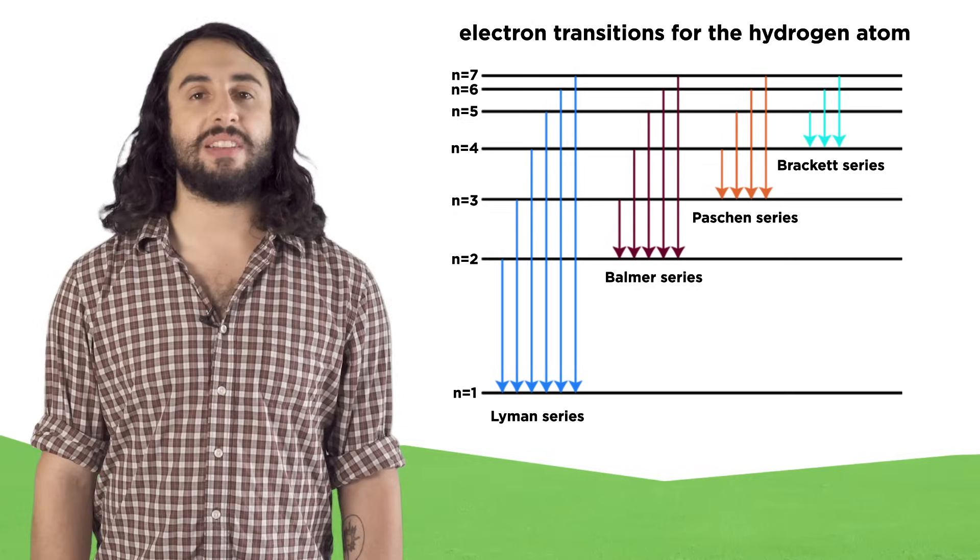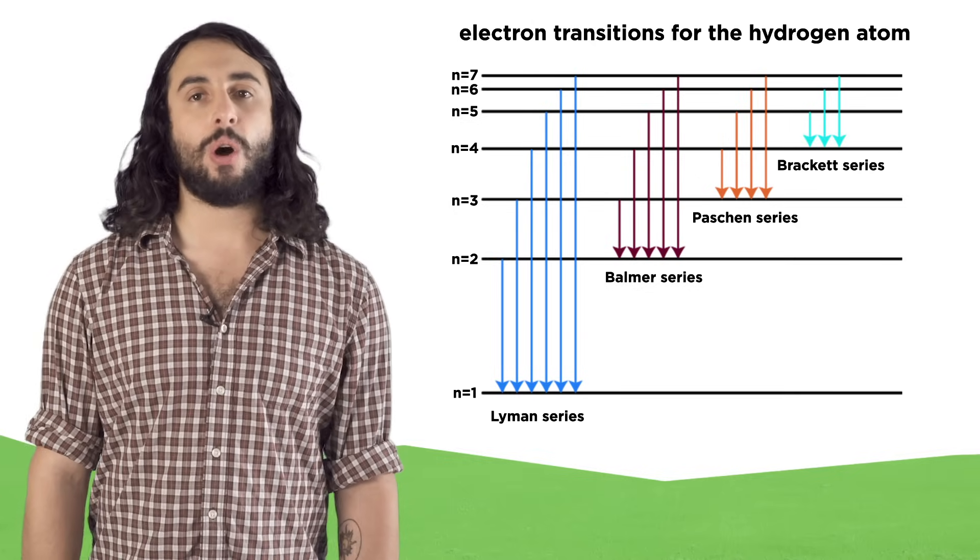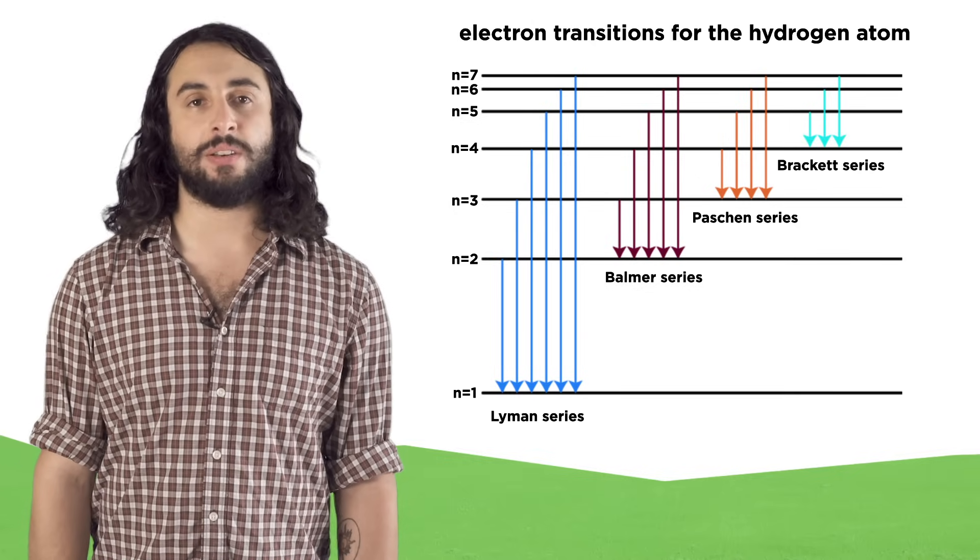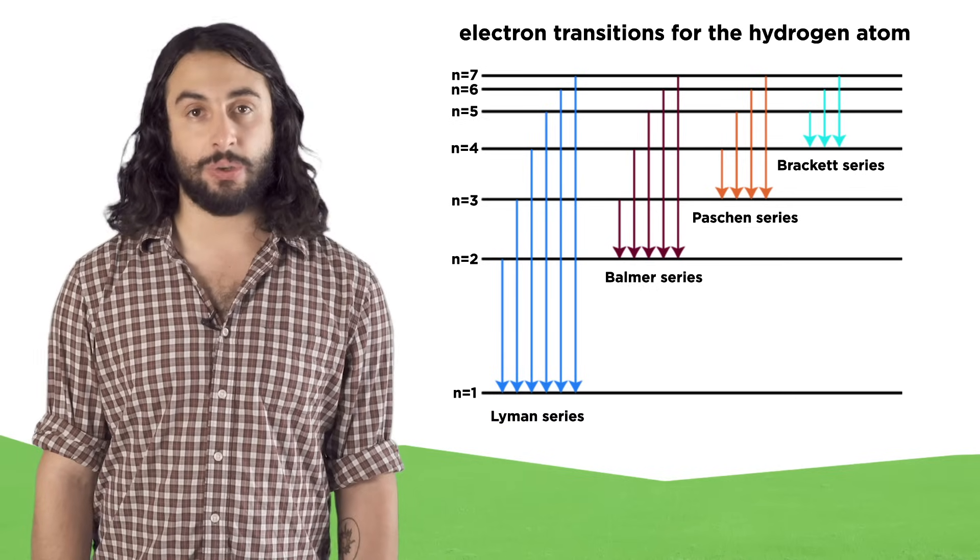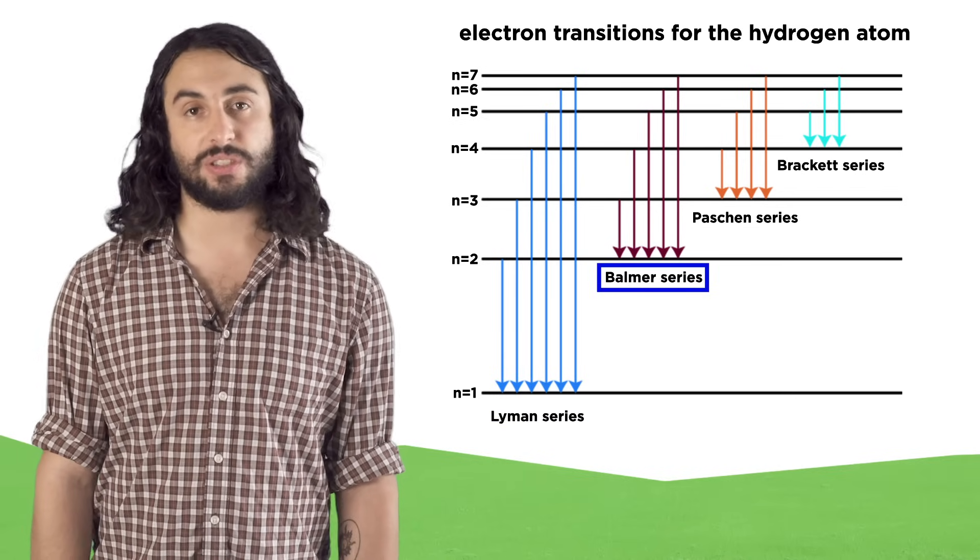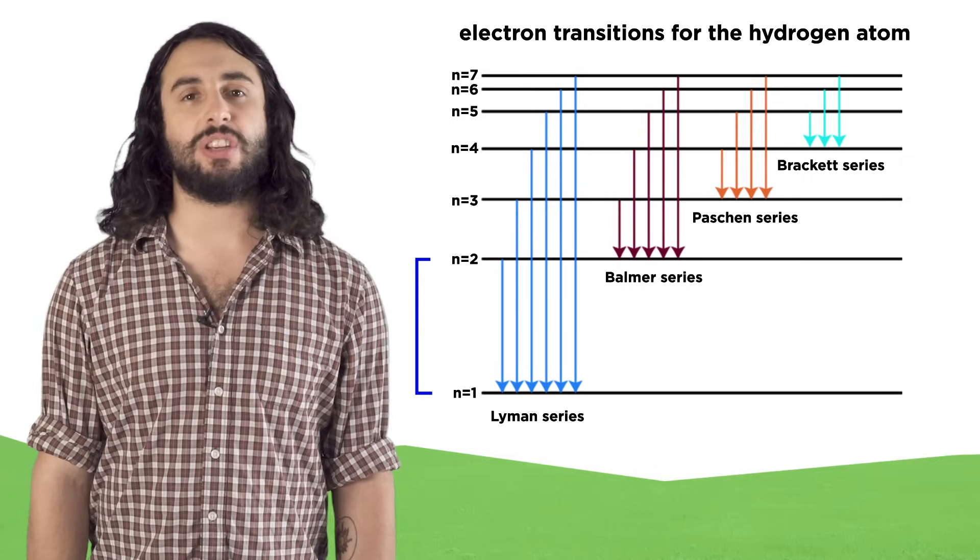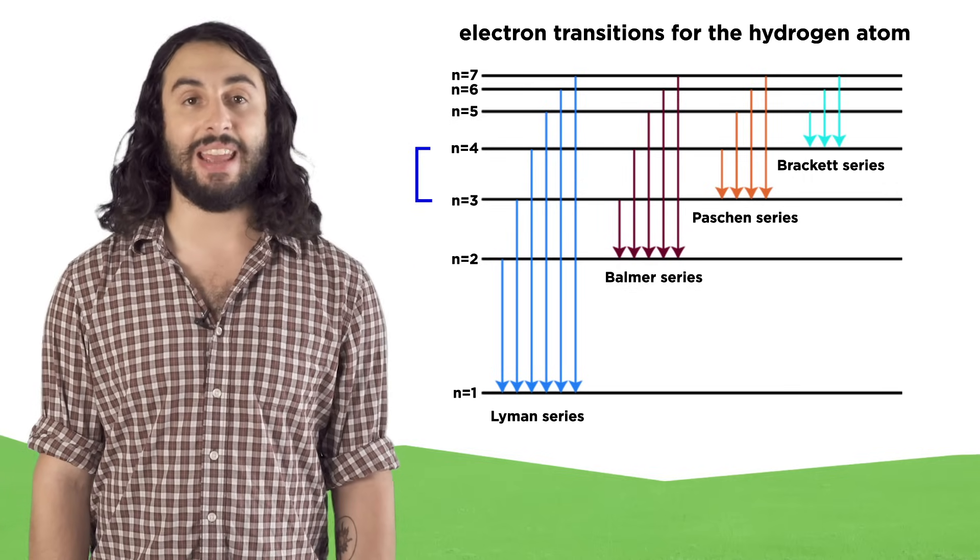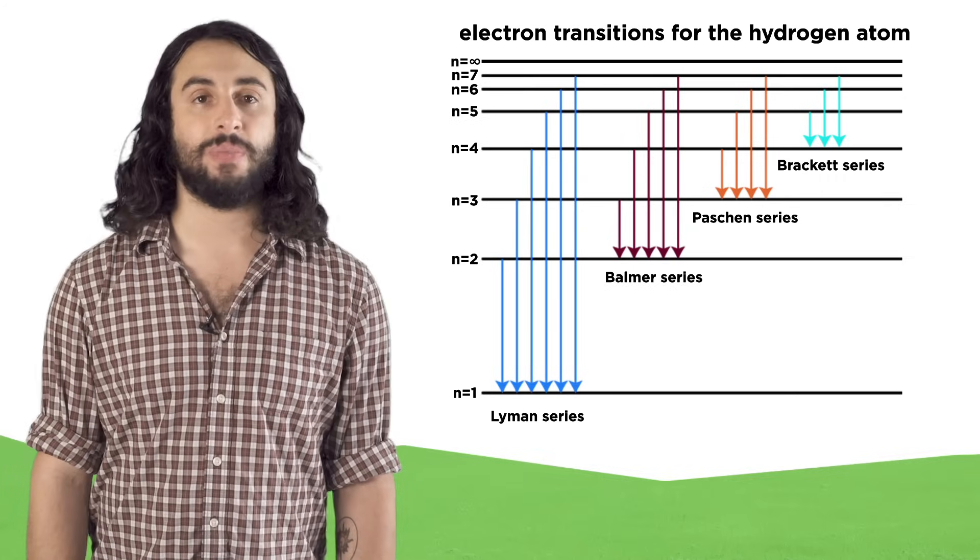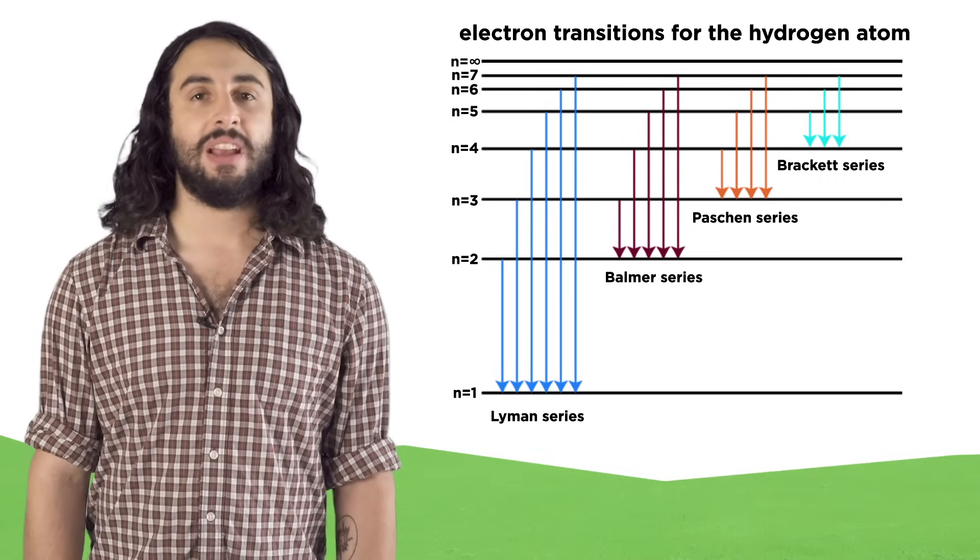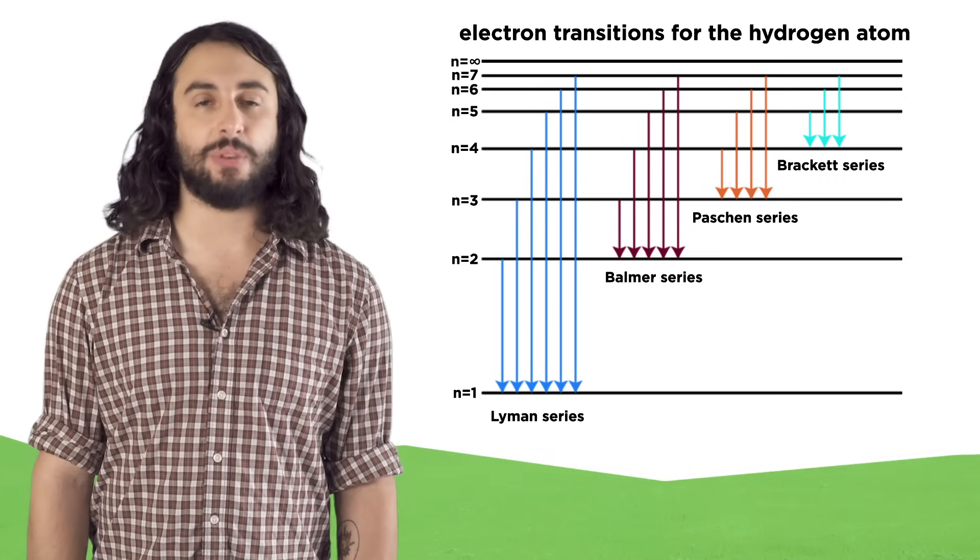We group the transitions according to the energy level they land on. All the ones that end on n equals one are called the Lyman series. The ones that end at n equals two are the Balmer series and so forth. Notice that the energy level gaps decrease as n increases and n equals infinity is actually a finite distance from the nucleus. If an electron goes beyond that it is considered to have been ejected from the atom.